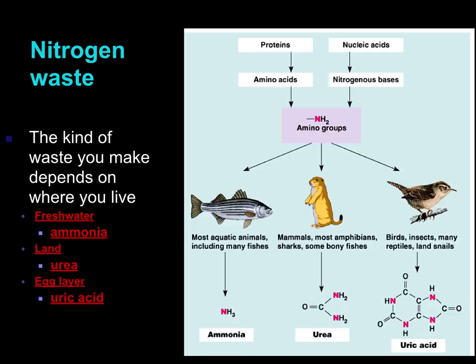Proteins and nucleic acids get broken down and eventually the amino group is removed. This amino group can form a waste product — for example, ammonia, urea, or uric acid. Notice how different organisms produce different nitrogen waste products. Ammonia is the easiest product to form when the amino group is removed. It does not require ATP and it's soluble in water. However, ammonia is very poisonous, so only organisms such as freshwater fish, which have access to large volumes of water, use ammonia as a waste product.